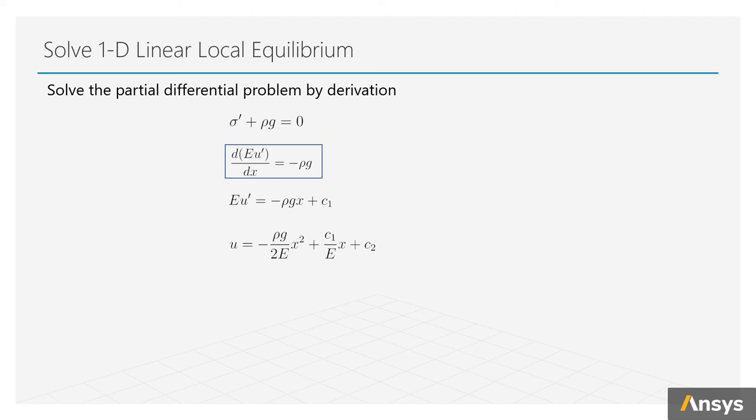If we do an integral to this differential equation, we need to add a constant C1 to the end. Doing another integration, we will have the expression of the deformation u, but we need to add another unknown constant C2. So, if we find C1 and C2, the problem is solved. But how to find them?